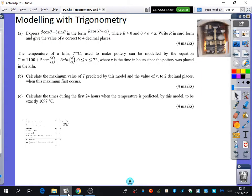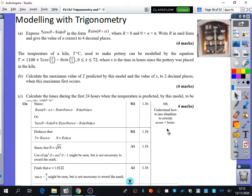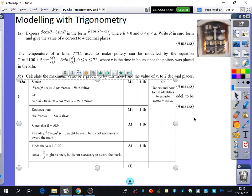OK, we're going to do some modeling with trigonometry. I'm actually not going to do part A of the question to save us a bit of time. We're just going to have a look at the mark scheme for part A, which asks us to express 5 cos θ - 8 sin θ in the form r cos(θ + α), where r is greater than 0, α is between 0 and π. We want r in surd form and α correct to four decimal places. That's just the harmonic identity, and we've done an awful lot of practice on that.